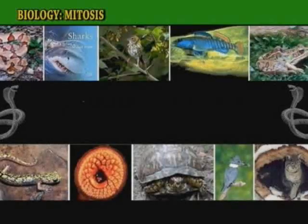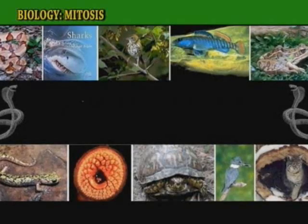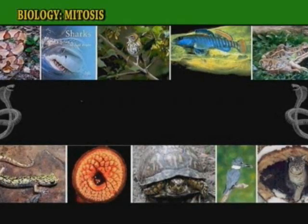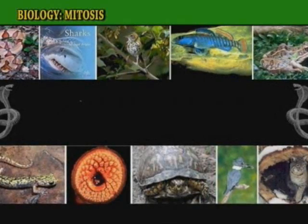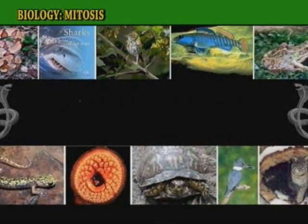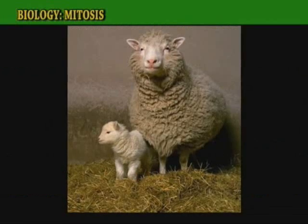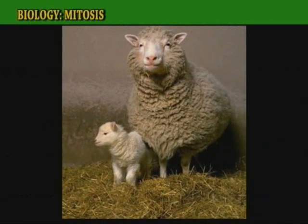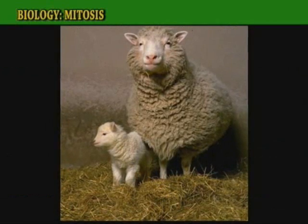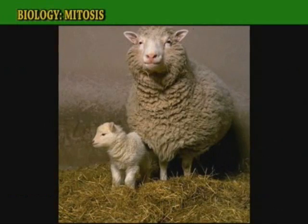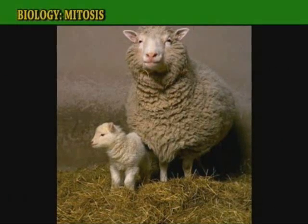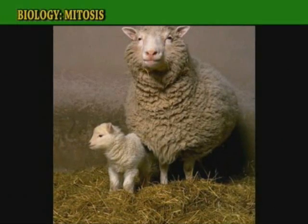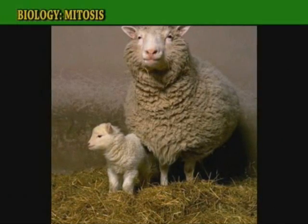Animals are also cloned. In 1996, the first vertebrate was cloned. This was when they cloned the sheep Dolly. A cell was taken from her udder and used to make other sheep which were genetically identical to her.